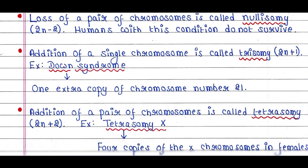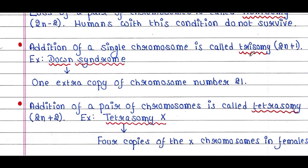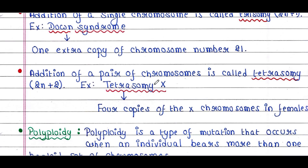Addition of a single chromosome is called trisomy, represented as 2n+1. An example of trisomy is Down syndrome, where one extra copy of chromosome number 21 exists, so affected individuals have 47 chromosomes total. Addition of a pair of chromosomes is called tetrasomy, represented as 2n+2. An example is tetrasomy X, where 4 copies of the X chromosome are present in females, giving them 48 chromosomes total.